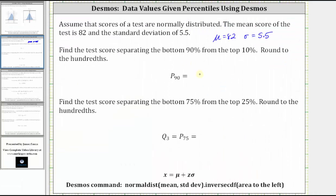So let's go ahead and record this and take a look at the second part. We're asked to find the test score separating the bottom 75% from the top 25%, which is the third quartile or 75th percentile.